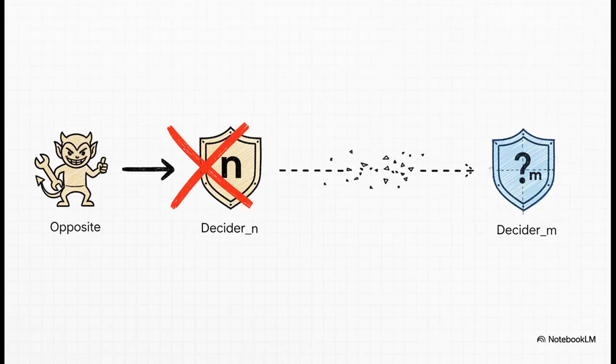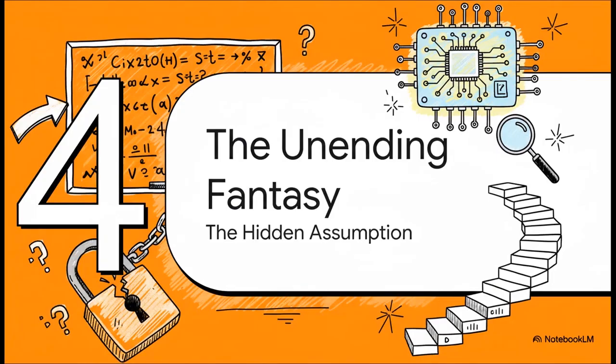And right there, that's the fatal flaw in the whole contradiction argument. See, an adversary can build a program like opposite underscore one to contradict a decider that already exists, but you can't build a program to contradict a future decider, one that hasn't even been written yet. The whole contradiction machine just falls apart. So if the logic can be dodged that easily, why has this proof been so powerful for so long? Well, it's because it relies on this massive hidden assumption, an assumption that takes place in a complete fantasy world.